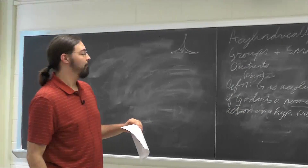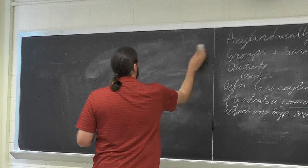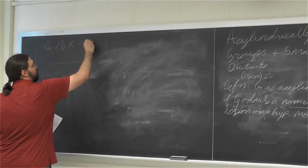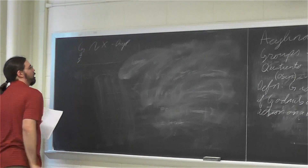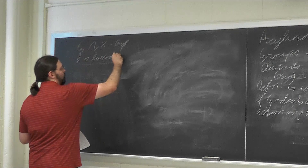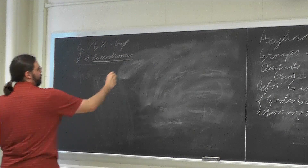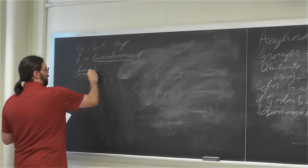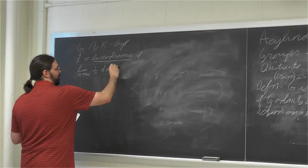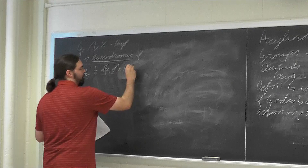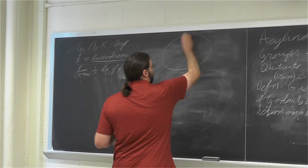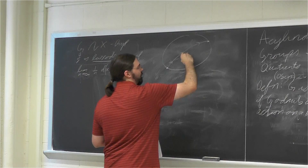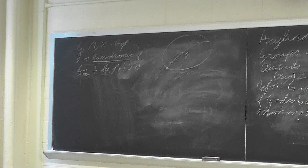Let me mention a few non-examples and say something about what Ilya brought up. If you have a group acting on a hyperbolic metric space and an element g, this element is called loxodromic if the limit as n goes to infinity of d(x, g^n x) divided by n is positive. What that means is that g acts on the space X with some bi-infinite quasi-geodesic axis, and g translates points along this axis.